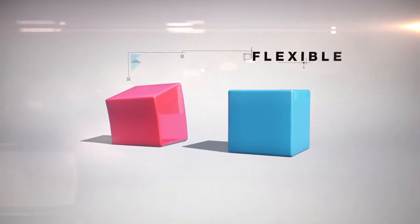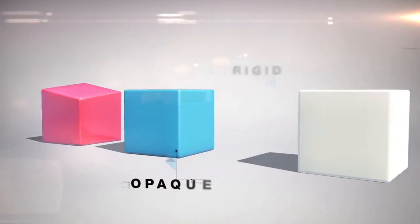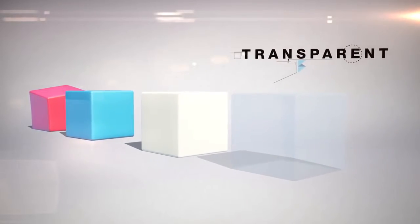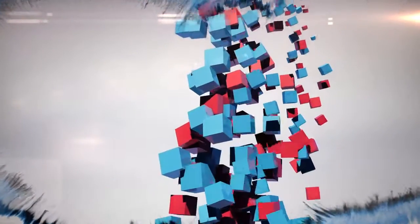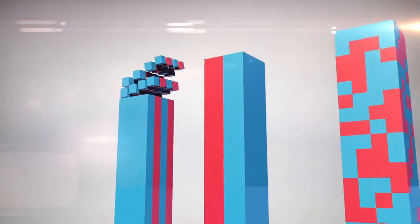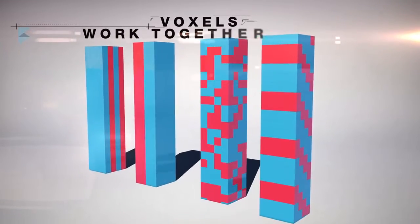For example, they can be flexible or rigid, opaque or transparent. Voxels are more powerful when they work together, combining and composing an unlimited range of material properties to create new, more complex composite materials and achieving the creation of objects with properties like never before.